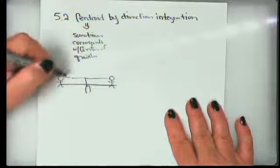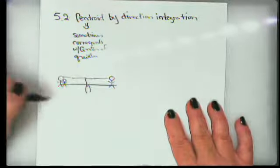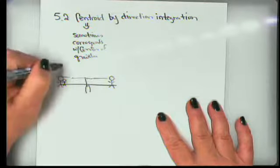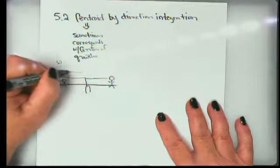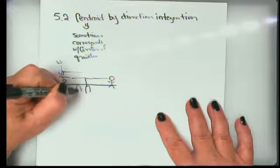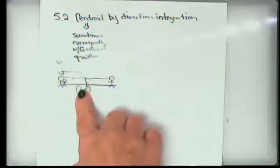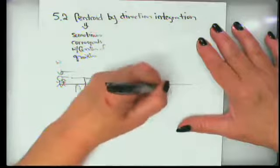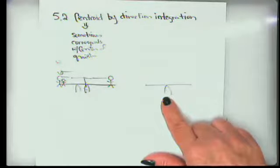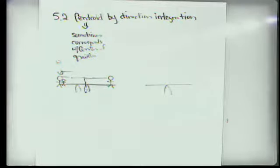But if one child brings his little brother, so you have two kids on one side, there's more weight there and you need to reduce the moment arm—for example, by sliding the center point over to keep it balanced. When we talk about the centroid of a teeter-totter, it's kind of trivial because it's just right in the middle, unless you distribute the weight differently.